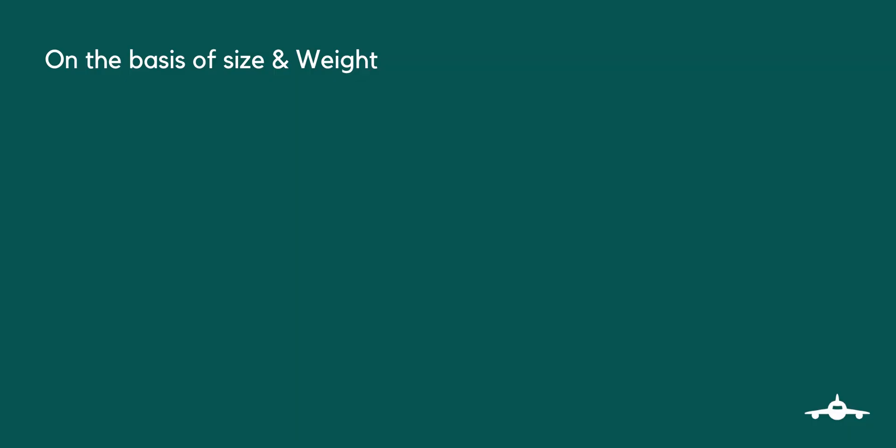For classification according to weight and size, UAVs come with the following subclasses. Nano UAVs: this class includes UAVs with dimension restrictions ranging from the size of a small insect, that is 10 to 15 centimeters long, and weighing up to 250 grams.